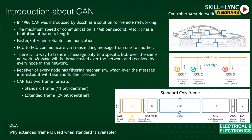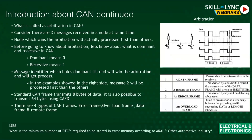Standard frame uses 11-bit identifiers, meaning all 11 bits are used for identifying the message. Extended frame uses 29-bit identifiers, which is much bigger — you have 29-factorial combinations compared to 11-factorial, giving you a far greater number of possible messages. People use the 29-bit identifier mainly in trucks, which require plenty of ECUs, while standard frames are used in cars.